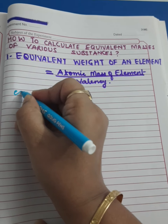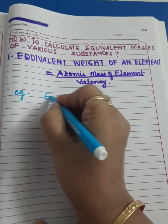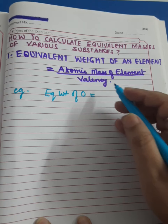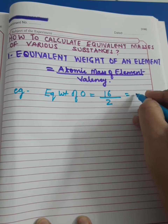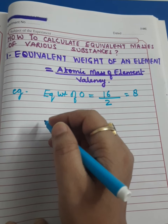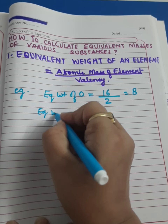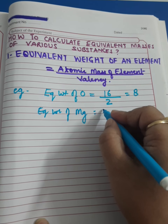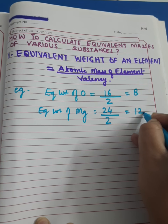Let us see some examples. For oxygen, equivalent weight equals atomic mass of oxygen, which is 16, divided by valency of oxygen, which is 2, so it equals 8. So 8 is the equivalent mass of oxygen. Similarly, equivalent mass of magnesium equals its atomic mass of 24 divided by its valency of 2, so equivalent mass of magnesium is 12.